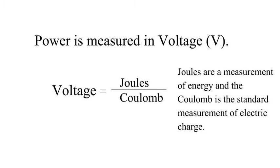The last few things we need to discuss about electrical circuits is how we measure things like power, current, or resistance. Power is measured in voltage. Voltage equals joules over coulomb. Joules are a measurement of energy, and the coulomb is the standard measurement of electrical charge.